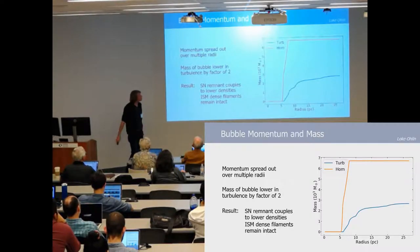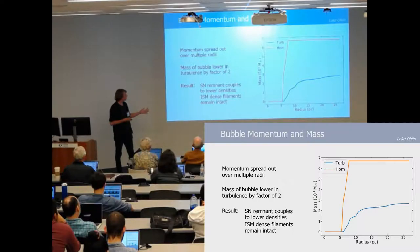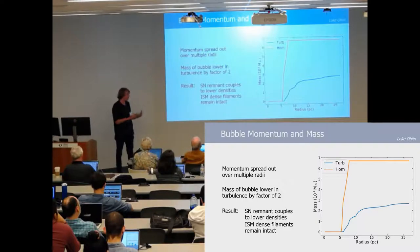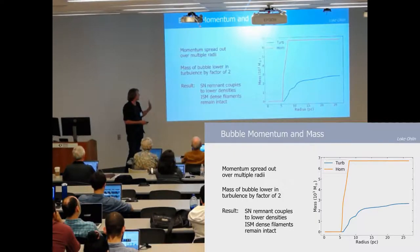This is even more apparent in the mass. Here we have the accumulated mass with respect to radius and we can see again a lot in the initial shock but it spreads out across the entire thing and is also much lower than expected from our environment. What we can say from this specific case study is that this supernova coupled to lower densities and low density gas while leaving the high density filaments intact.